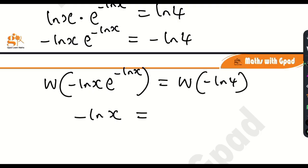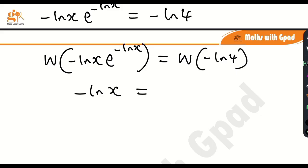Okay, good. So minus ln x is equal to the Lambert W function of minus ln 4.